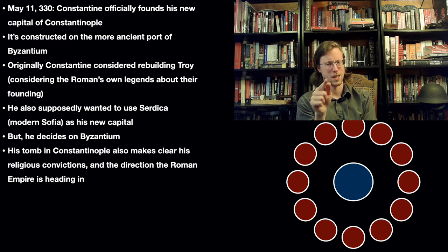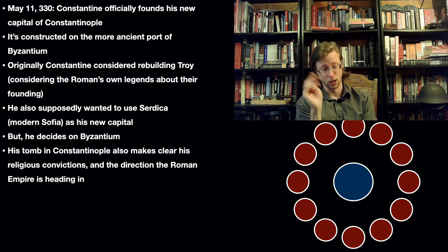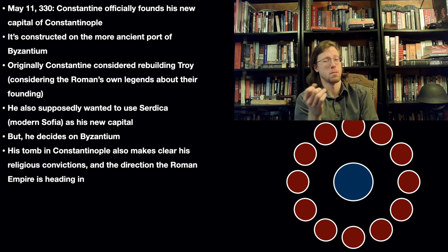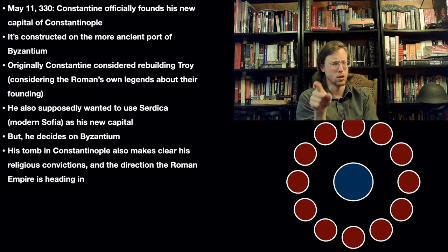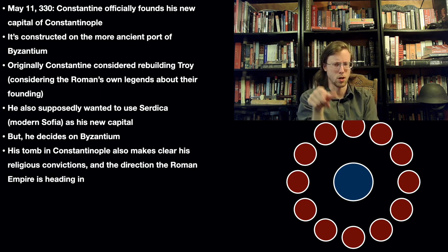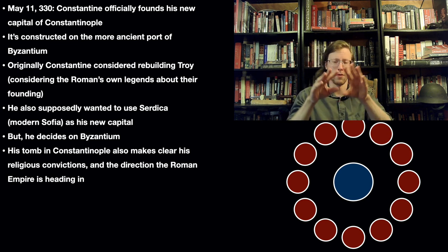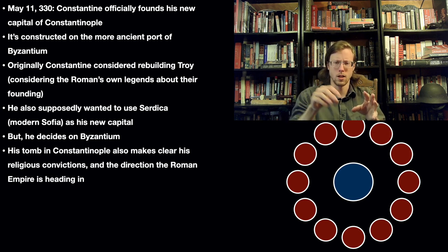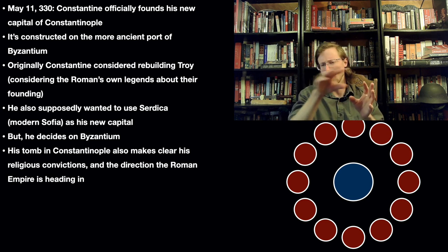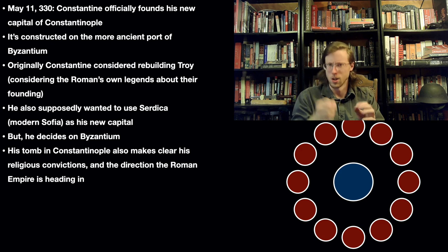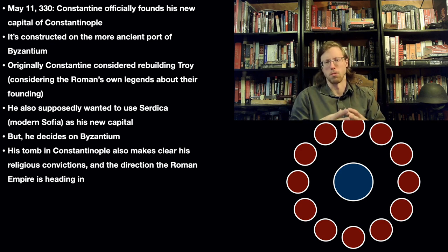He then builds nine more tombs, and supposedly the bones of the other twelve apostles are supposed to be in there. So if there are twelve circles and a tomb in the center where Constantine is buried, you see the symbolism: if there are twelve apostles and Constantine's tomb is in the middle of all of them — well, then who is he? It's great propaganda.